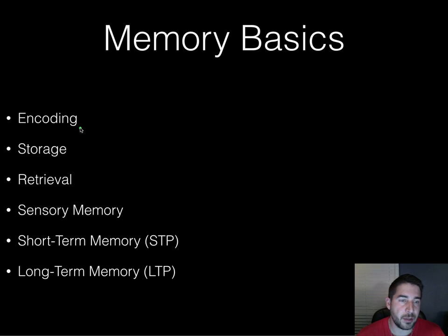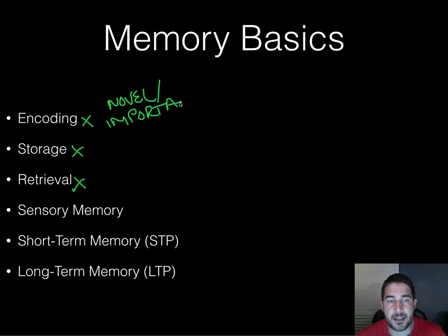First thing about memories, we've got to learn about these three related terms: encoding, storage, and retrieval. Encoding happens when we get information from the outside world. It's usually novel and or important, and we take that information from one of our senses, usually from this sensory memory here.